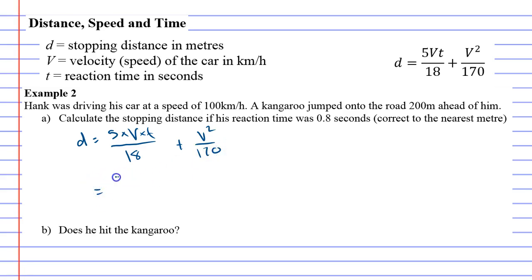All right, so v stands for velocity and our velocity was 100 kilometres an hour. Velocity and speed are the same thing.